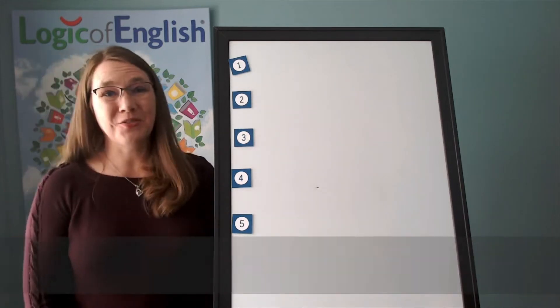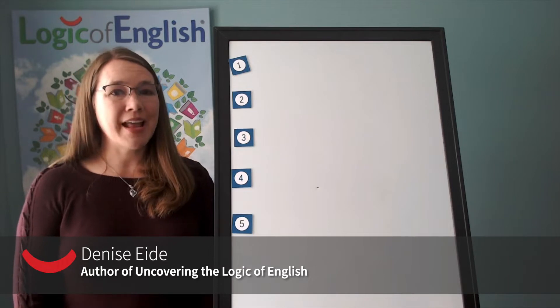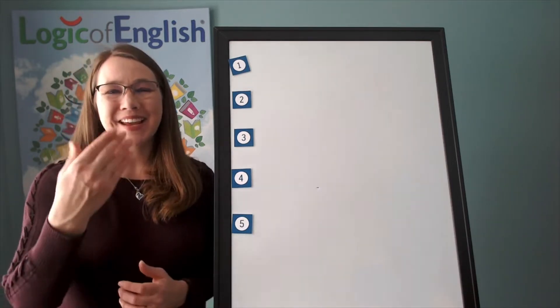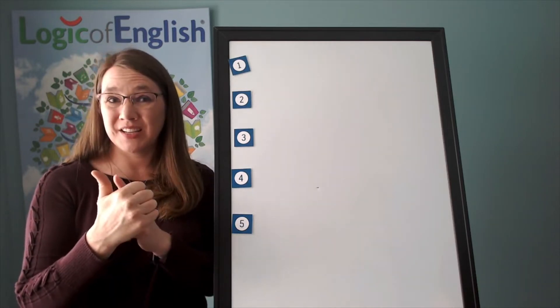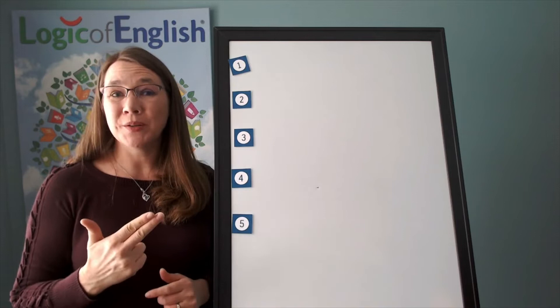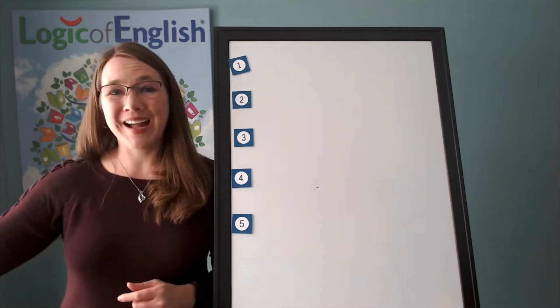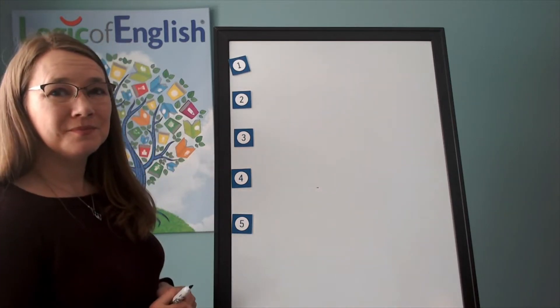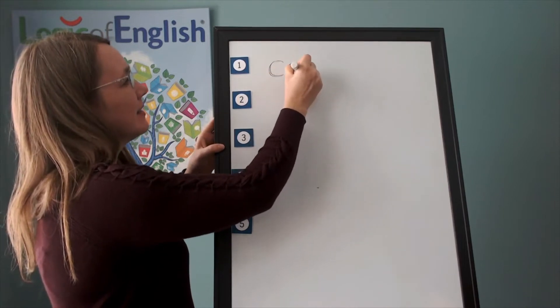Alright, our first word is cow. I heard a cow moo. Cow. Go ahead and say cow. Let's sound it out. Use a c-s. Ow-o. There's our new phonogram. Go ahead and write cow. Great. Now help me to write it. C-ow.